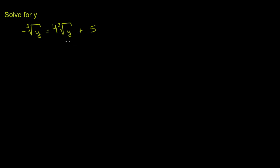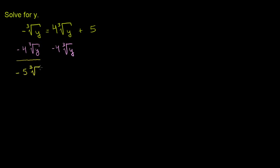The simplest thing to do, if we want all of the radical onto the left-hand side of the equation, we can subtract 4 times the cube root of y from both sides of this equation. On the left-hand side, you already have negative 1 times the cube root of y, then you subtract 4 more of the cube root of y, so you get negative 5 times the cube root of y.